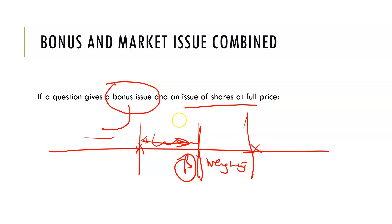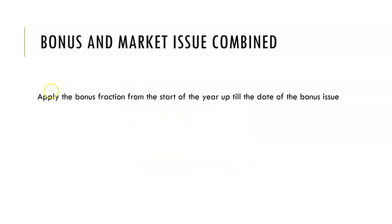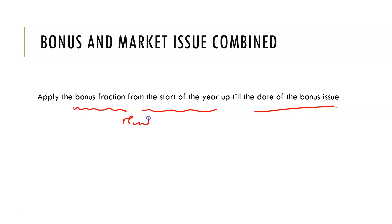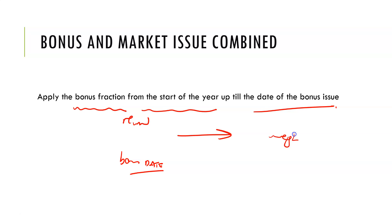So if a question gives a bonus issue and an issue of shares at full pricing, the first thing is to apply the bonus fraction from the start of the year. The key point is to stop at the bonus issue date. The whole idea is that we want to reward the people who already exist — give them their own share of the bonus. But once we get to the bonus date, we recognize their full shares. That's how the math works: recognize the bonus fraction and then weight them. Once we get to the bonus date, we fully recognize the full number of shares, and then just weight the shares based on timing.